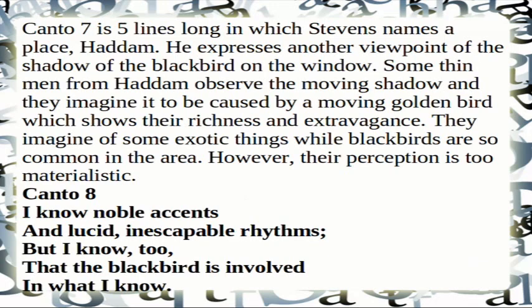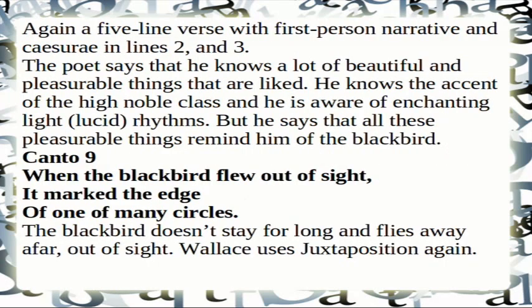Canto 8: 'I know noble accents and lucid, inescapable rhythms, but I know too that the blackbird is involved in what I know.' This is a five-line verse with first-person narrative. The poet says he knows a lot of beautiful and pleasurable things — the accent of the high noble class and enchanting, lucid rhythms — but all these pleasurable things remind him of the blackbird.